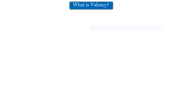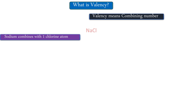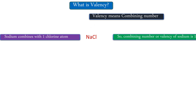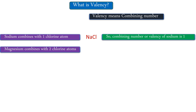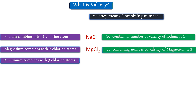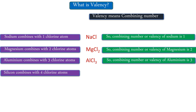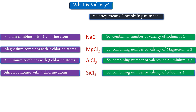What is valency? Valency basically means a combining number. For example, sodium combines with one chlorine atom to make sodium chloride, so the combining number or valency of sodium is one. Magnesium combines with two chlorine atoms to make magnesium chloride, so the valency of magnesium is two. Aluminum combines with three chlorine atoms, so its valency is three. Silicon combines with four chlorine atoms, so its valency is four.